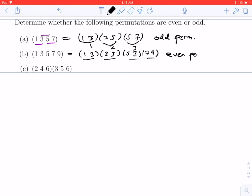Now we have two 3-cycles. The first 3-cycle we can write as (2 4)(4 6), and the second 3-cycle we can write as (3 5)(5 6). 1, 2, 3, 4 transpositions—4 is even, so we have an even permutation.